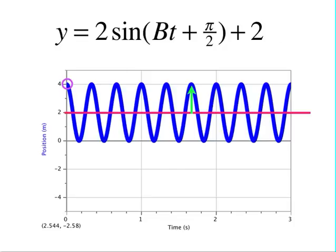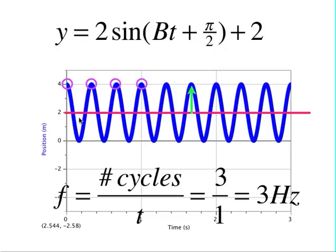The final thing that you need to find is the b value. To find the b value, you first determine the frequency. You determine the frequency by counting the number of cycles in a given amount of time. In this example, I counted the cycles in one second and you'll notice that there are three complete cycles in one second, so that's a frequency of 3 hertz.